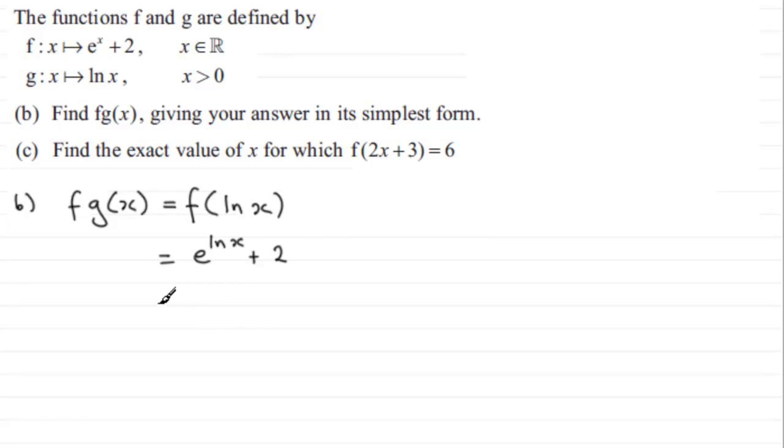Now you should be familiar with this result. If you've got e to the natural log of a value, then it's as if these cancel one another out. You're just left with that value, so this is x, and then you've got the plus 2, so it's x plus 2.